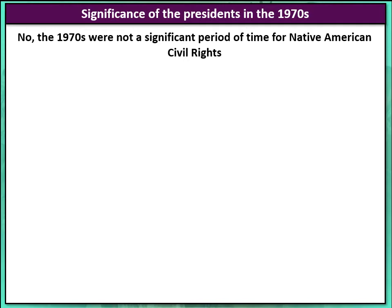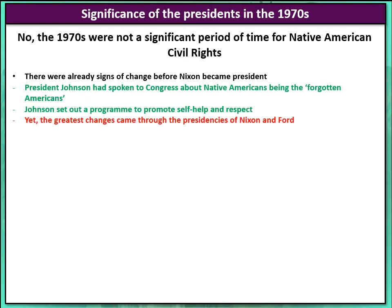How about the arguments that the 1970s were not a significant period of time for Native American civil rights? Well firstly, although this is a weaker argument, there were already signs of change before Nixon became president. In the 1960s, civil rights was obviously a very prominent agenda in US domestic politics, and President Johnson had already spoken to Congress about Native Americans being the forgotten Americans and had already set out a program to promote self-help and respect. Yet that program never comes to fruition in actual results, and so we can counter this by saying the greatest changes came through the presidencies of Nixon, Ford, and then later Carter. So this is an argument we can make, but it is a weaker one.